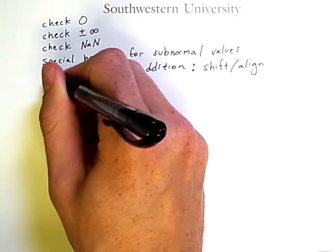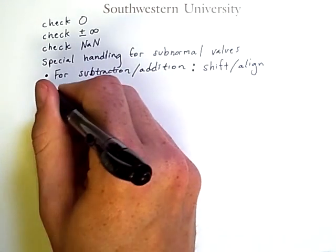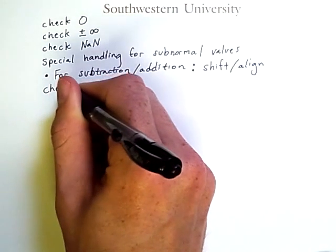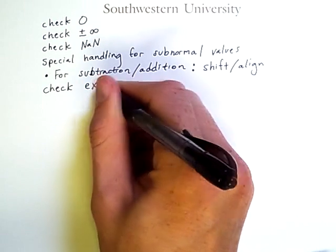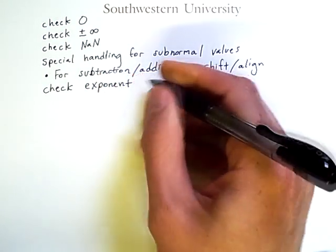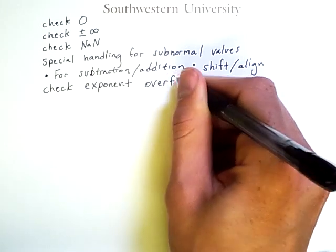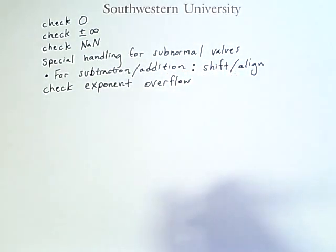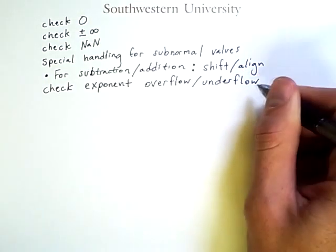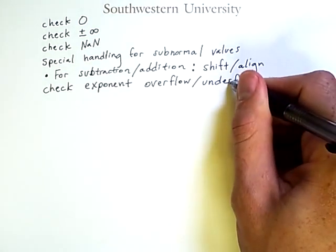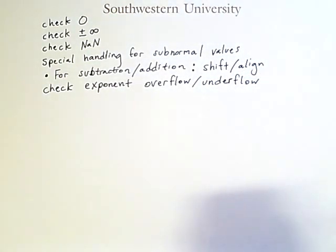And for all of the operations, we generally have to check afterwards for overflow, but not overflow of the significand, rather of the exponent. It's possible we could get an exponent that is too big to represent in our floating point representation. We also have to look for underflow, which would be an exponent too small to represent.